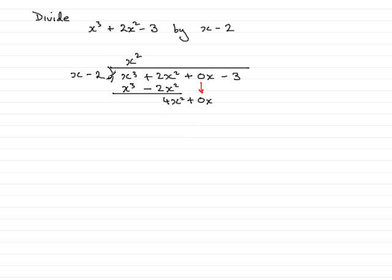What do we multiply x minus 2 by now to get 4x squared? That's 4x, so we have 4x. Multiply the 4x with the x minus 2. 4x times x, 4x squared. 4x times the minus 2, minus 8x. Subtract to find the remainder. Nothing here. 0x minus minus 8x is 8x.